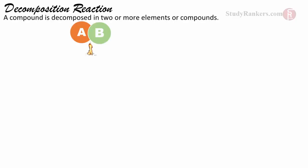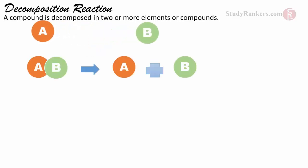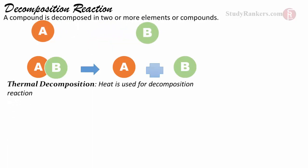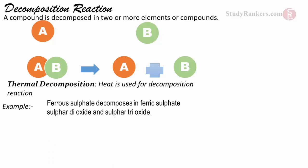The reaction in which a substance decomposes into 2 or more substances is known as a decomposition reaction. When decomposition takes place in the presence of heat, it is known as thermal decomposition. There are 3 types of decomposition reaction we have to study. First is thermal decomposition: ferrous sulphate decomposes into ferric sulphate, sulphur dioxide, and sulphur trioxide. Here is the balanced chemical equation.